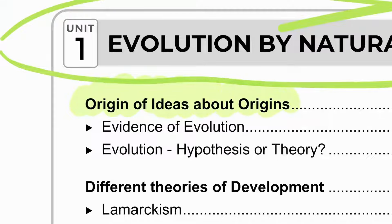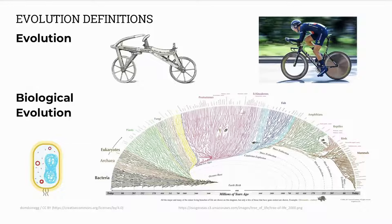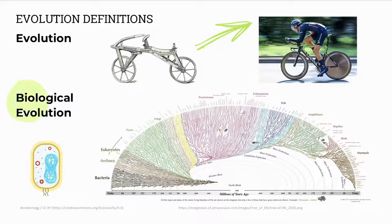We'll be looking at some definitions in evolution, including hypothesis and theory. What is evolution? Evolution is change over time in anything — bicycles, aeroplanes, chemicals, art, language. Whereas biological evolution is looking at change over time in living things, so it's genetic changes that are inherited in populations over time.